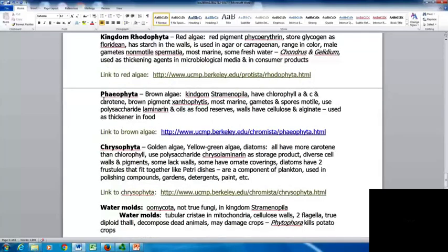Phaeophyta are your brown algae in the kingdom Stramenopila. They have chlorophyll A and C and carotene, and brown pigment xanthophyll. Most are marine. They can have gametes and spores that are motile. They use polysaccharide laminarin and oils as food reserves. Their walls have cellulose and alginate, which can be used as a thickener in food.